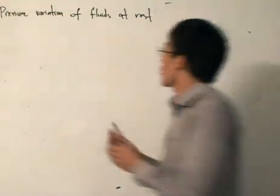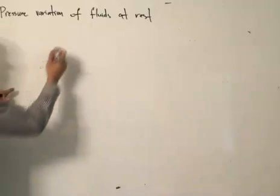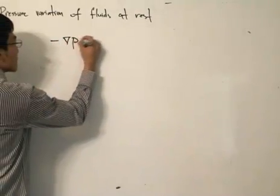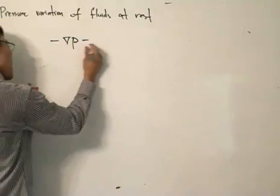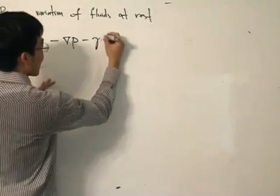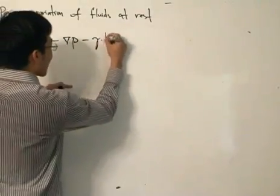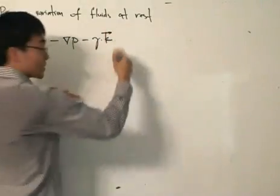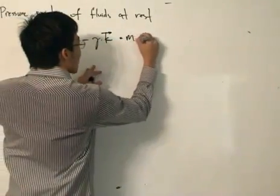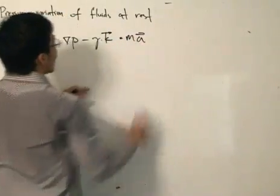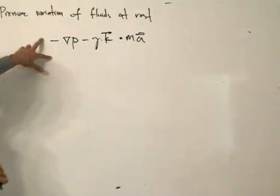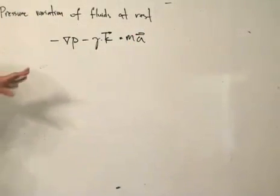What was our basic equation? The del-operator on the pressure, subtract the specific weight multiplied by the k-component — because the weight acts down in the k-component — equals mass times acceleration. This is our basic equation, and we can use it to handle many different fluids.